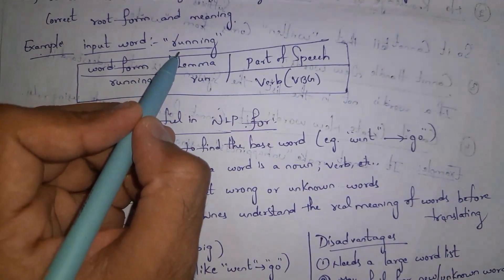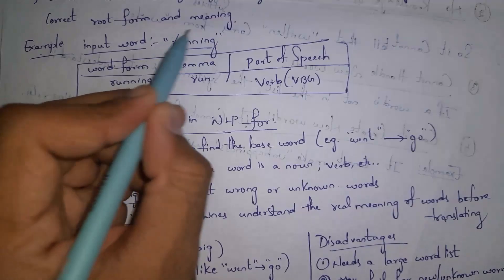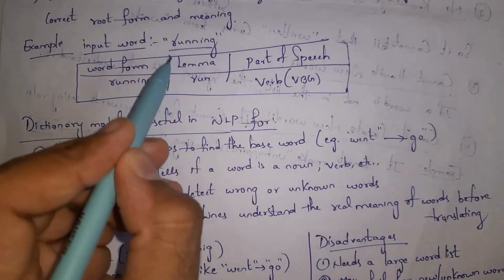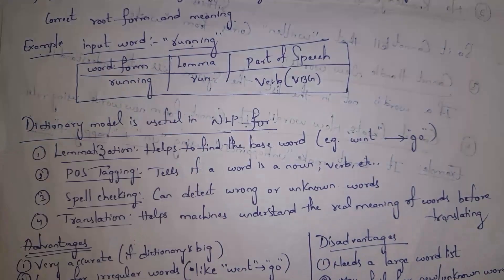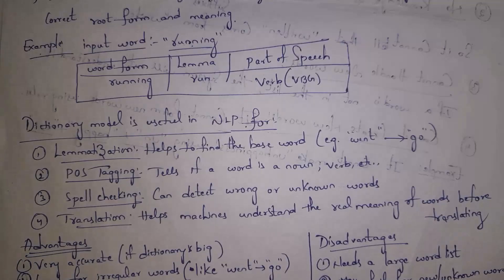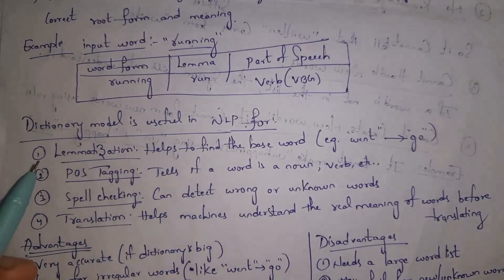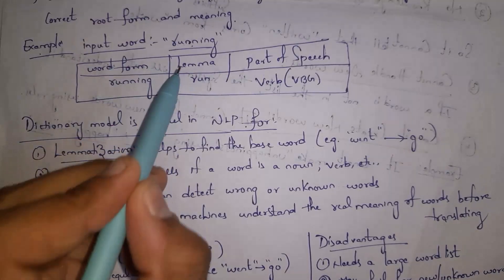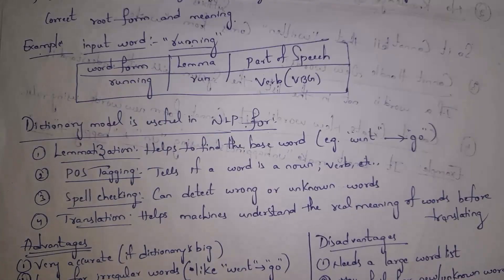In the dictionary-based morphological model, we train our model using the dictionary so it gives correct output. For example, when I give the word 'running' to the model, the output will be: word form is 'running', lemma (root word) is 'run', and parts of speech is verb. This model is useful in NLP for lemmatization — bringing a word to its base form. For example, converting 'running' to 'run' is known as lemmatization.